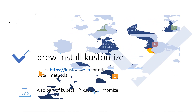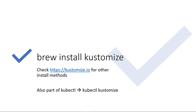The first thing we have to do is install Kustomize on our local machine. I'm using Windows Subsystem for Linux version 2, running Ubuntu 18.04, and I've also installed Brew for Linux, so I can just use brew install kustomize. There are of course other methods — just check out kustomize.io for those.